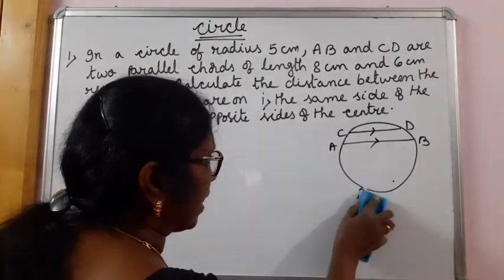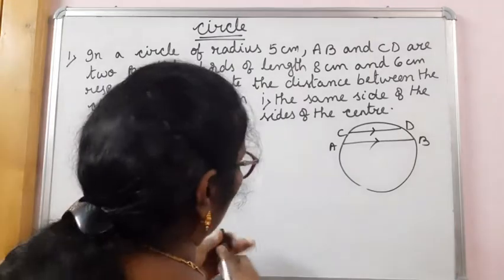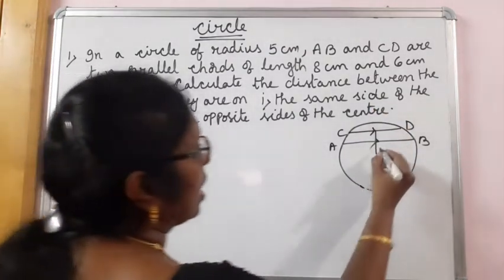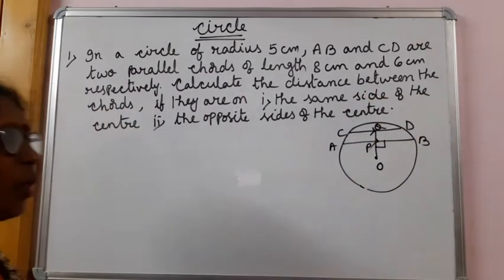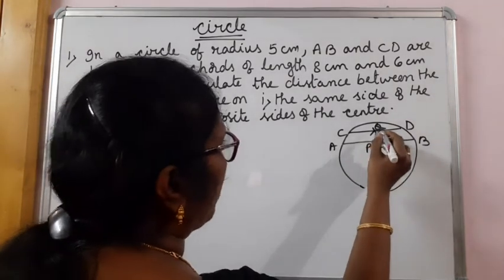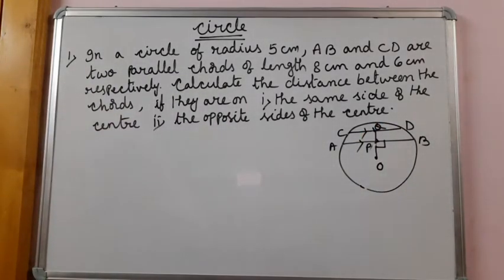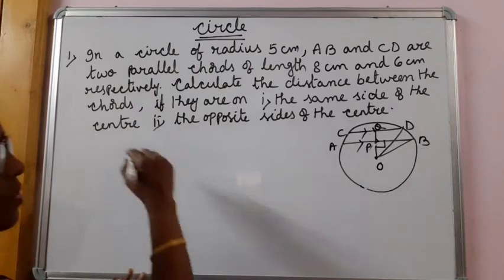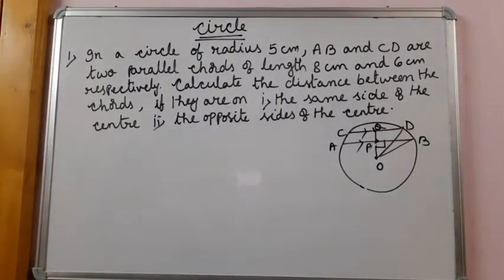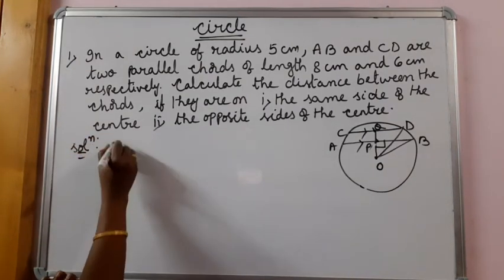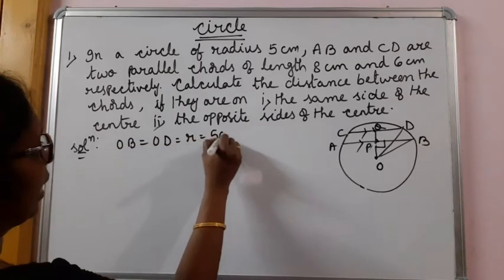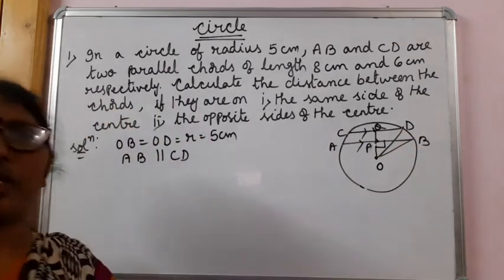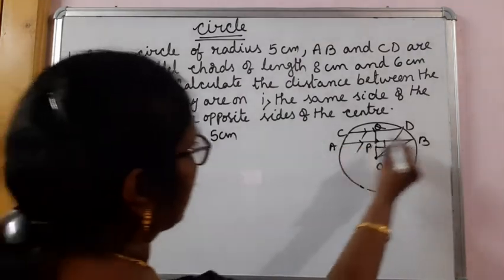From O to AB and CD, let us draw perpendiculars. Let me name this as P and this as Q. So OP is perpendicular to AB and OQ is perpendicular to CD. These two chords are parallel, as given. Let us also draw OB and OE, and the radius is 5 cm, so OB is 5 cm and OE is also 5 cm. OB equals OE equals R equals 5 cm. AB is parallel to CD. AB is 8 cm and CD is 6 cm.